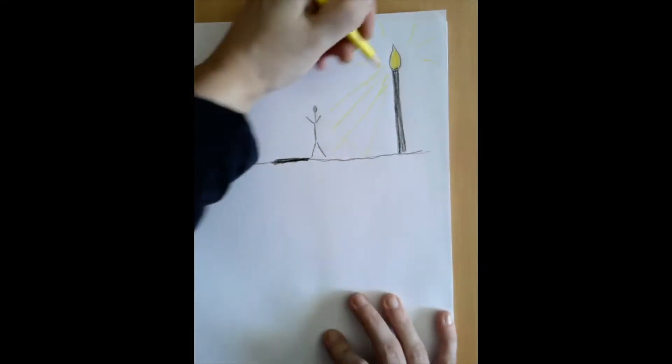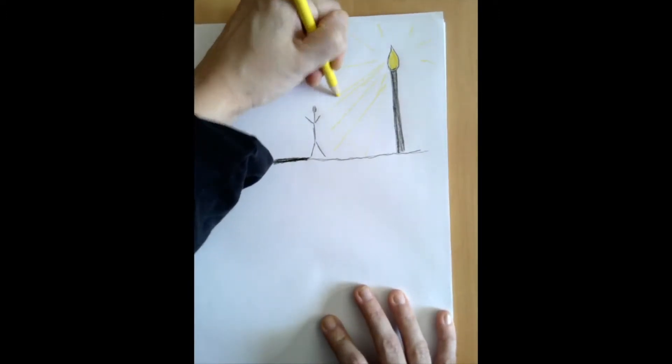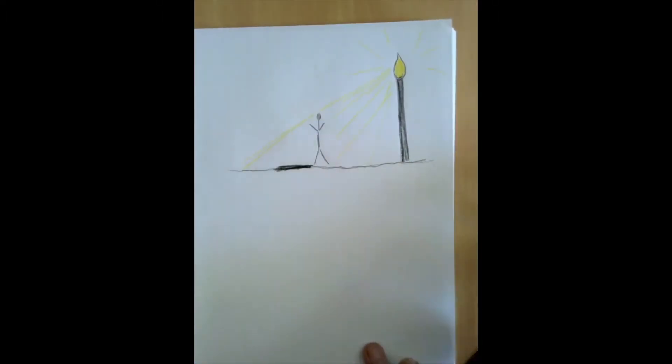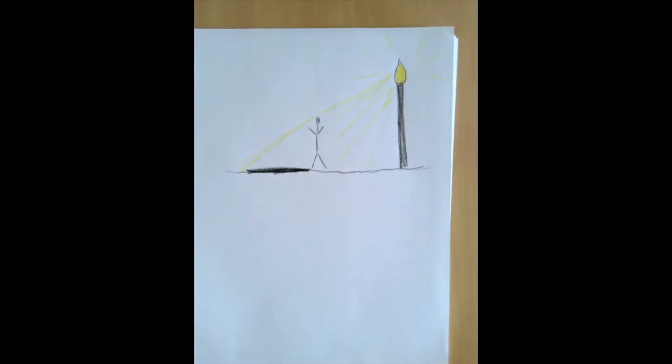Now, how long is the shadow? The first little ray of light that represents the end of the shadow would be here, and so that makes this shadow this long.